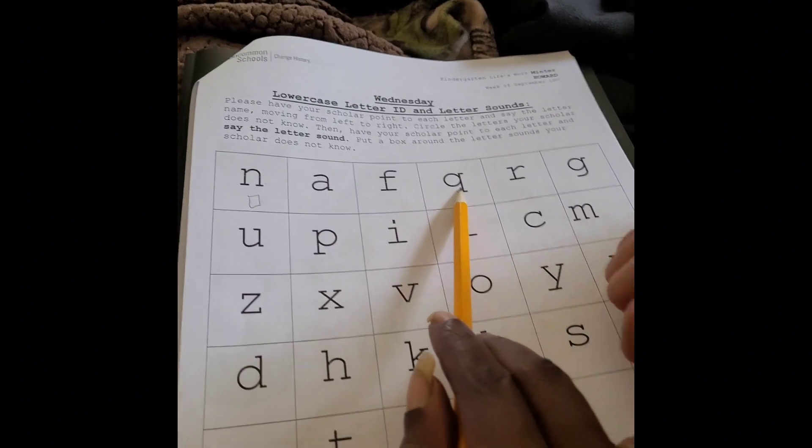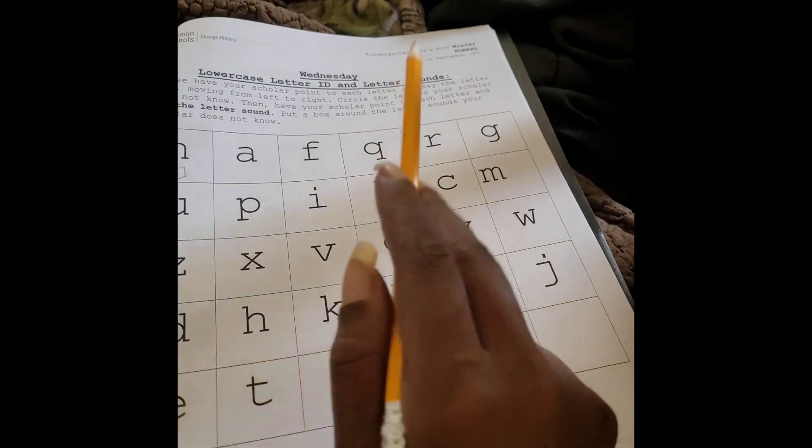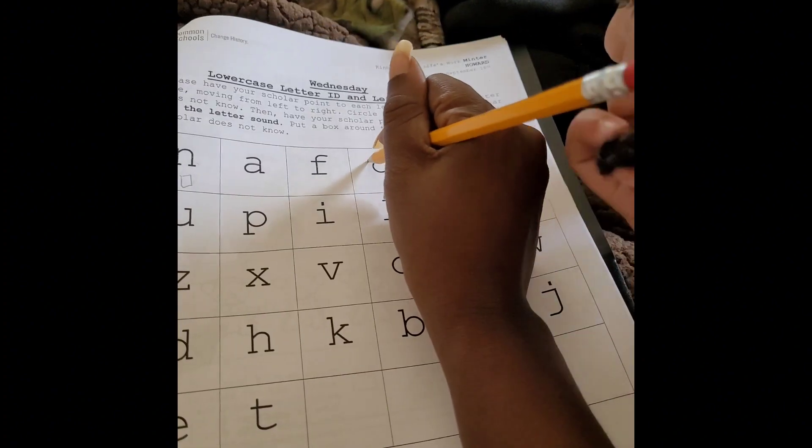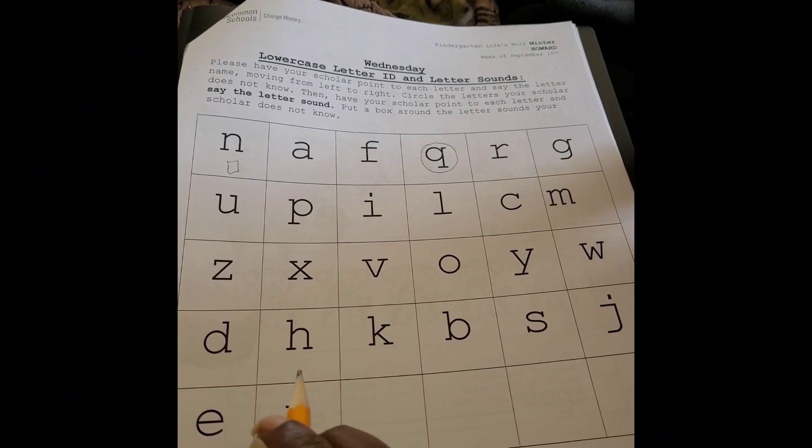P. Nope, that's a P. That's a P. This is a P. What is this? I don't know. Q. Oh, a Q? Give me something that starts with the letter Q.